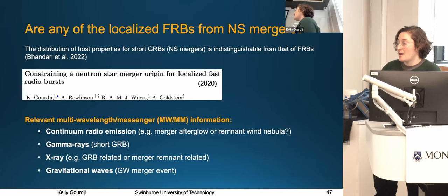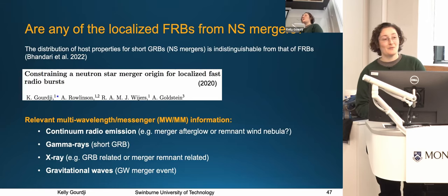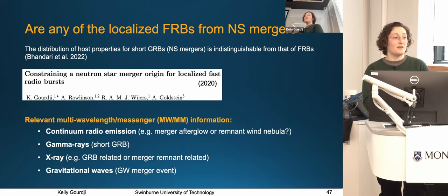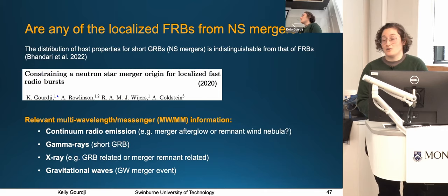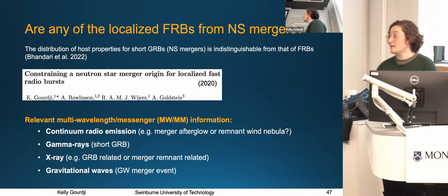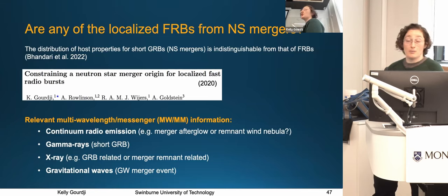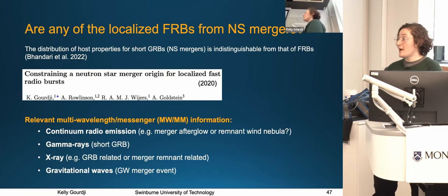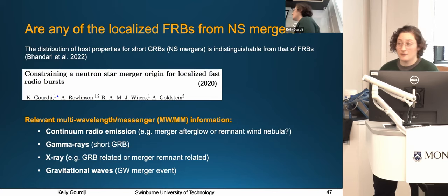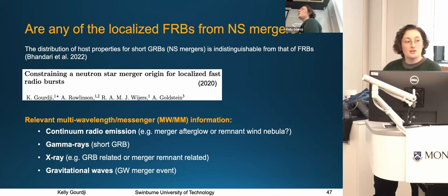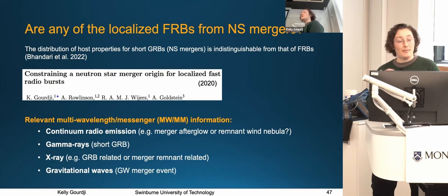What we demonstrate in that paper is that ultimately, to make meaningful constraints, you're really going to need additional multi-wavelength, multi-messenger information. To connect these two phenomena — or rule them out — you'll need the merger radio afterglow I mentioned, or possibly a radio counterpart associated with a magnetar wind nebula, gamma rays for a GRB association, and of course gravitational waves. So the next question is: how do you build up this joint FRB multi-messenger, multi-wavelength sample?